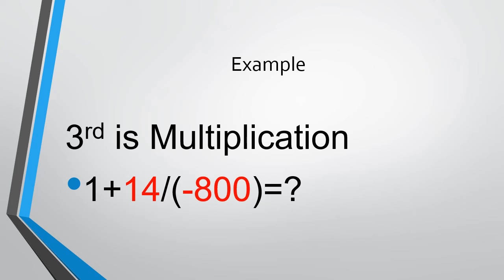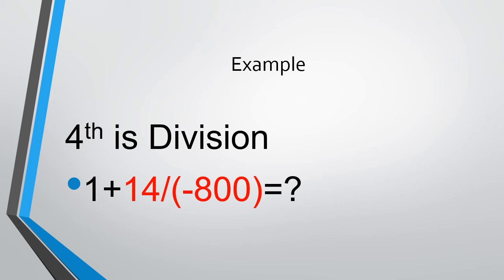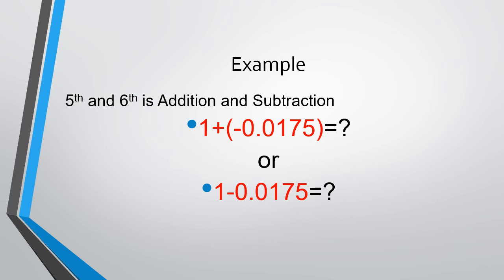Next is division, which is a fraction: 14 over minus 800, or 14 divided by minus 800. When you calculate that out, you get negative 0.0175.